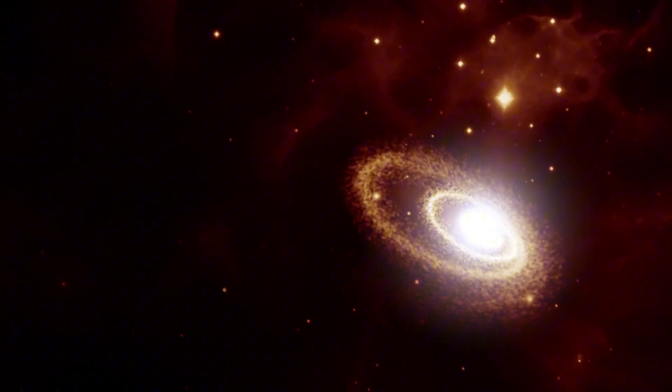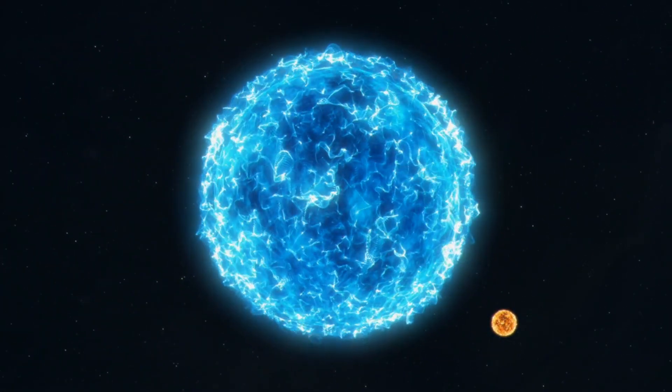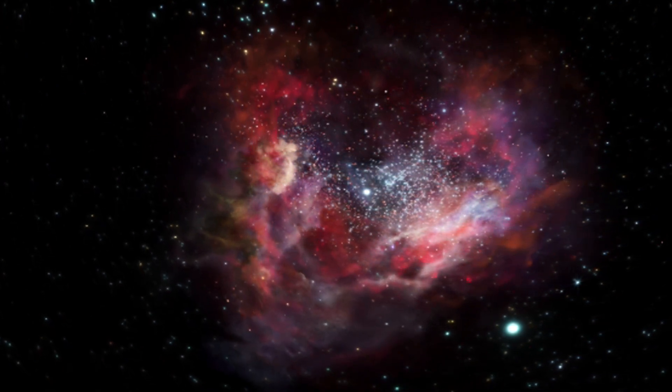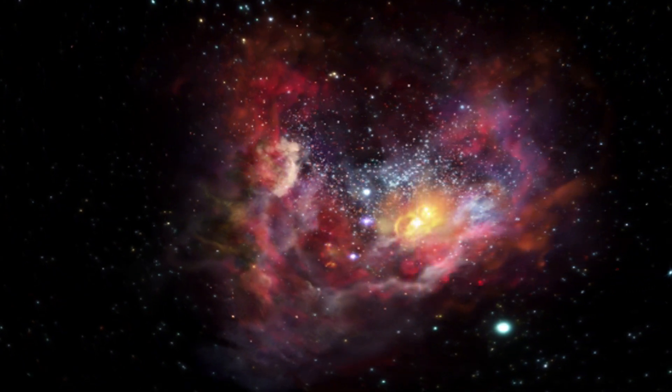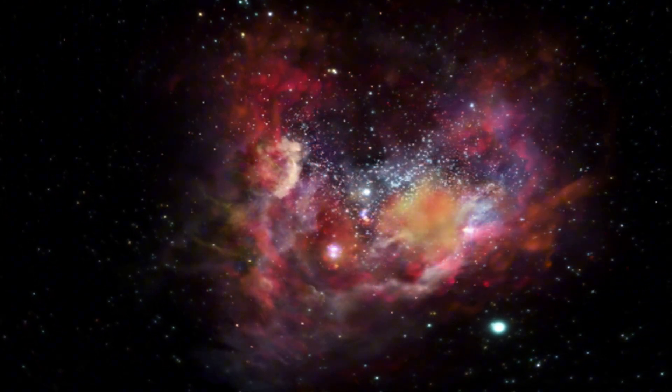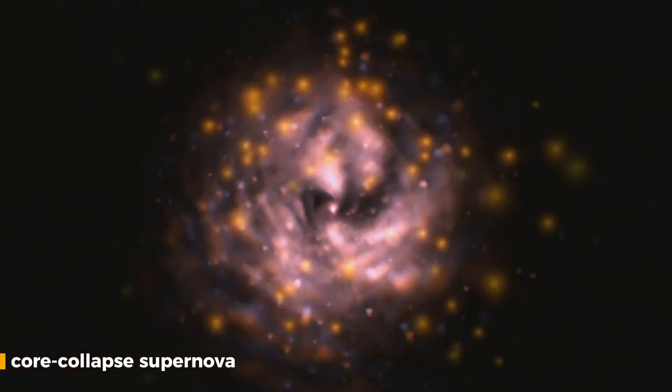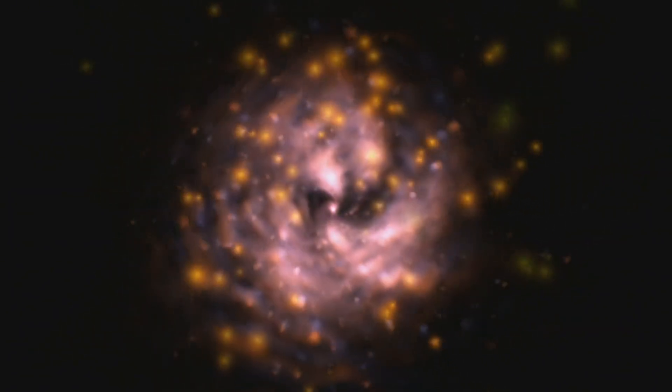A supernova can occur at the end stage of a dying star which weighed at least eight times out of our sun. Once the fusion process inside a star stops, it is unable to hold against gravity, and its core suddenly collapses, leading to a magnificent supernova explosion. This type of supernova is called a core-collapse supernova. Many close or well-known stars fall into the category of stars that can undergo a core-collapse supernova.